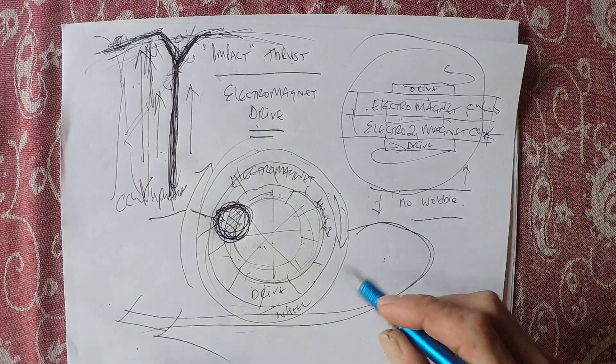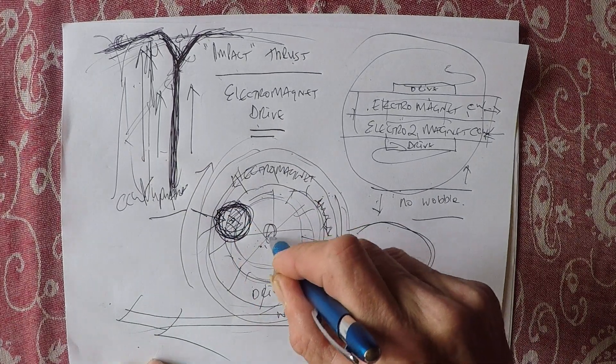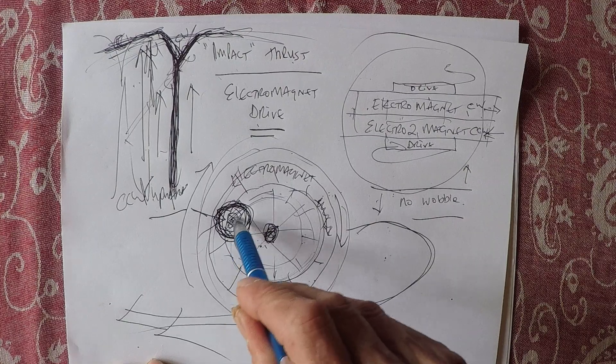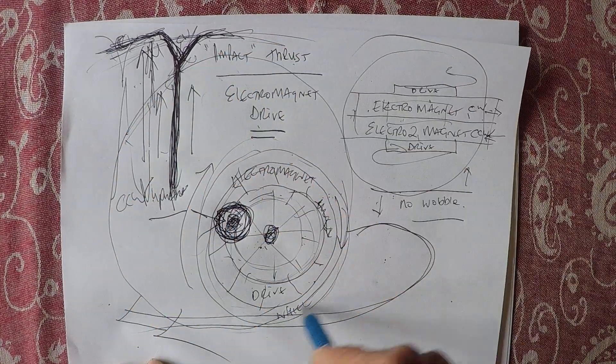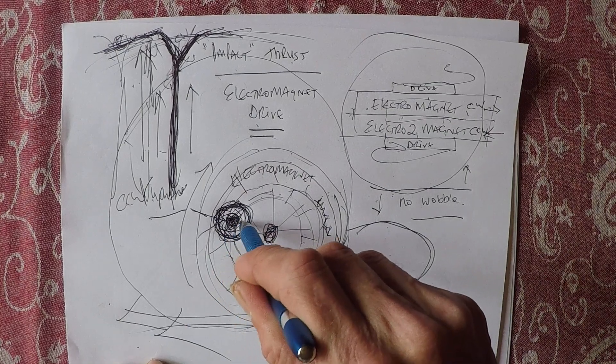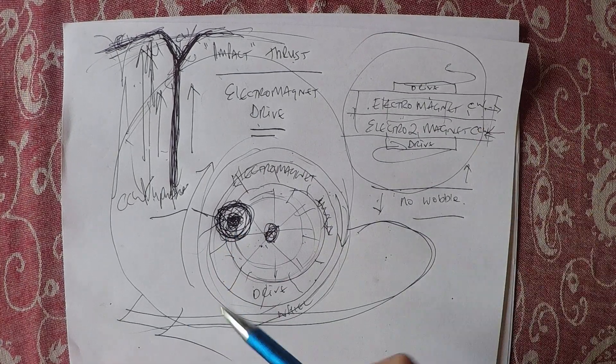So now instead of it spinning here, it now spins here. And so all of this must try and do that. Now it's going to spin around this point. Now there might be action-reaction where this is completely cancelled out.